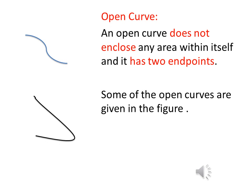Another type of curve is an open curve. An open curve does not enclose any area within itself and it has two distinct endpoints. As shown in the figure, there are two curves in which you can see two visible endpoints in both curves; these curves do not enclose any specific region or particular area within themselves.